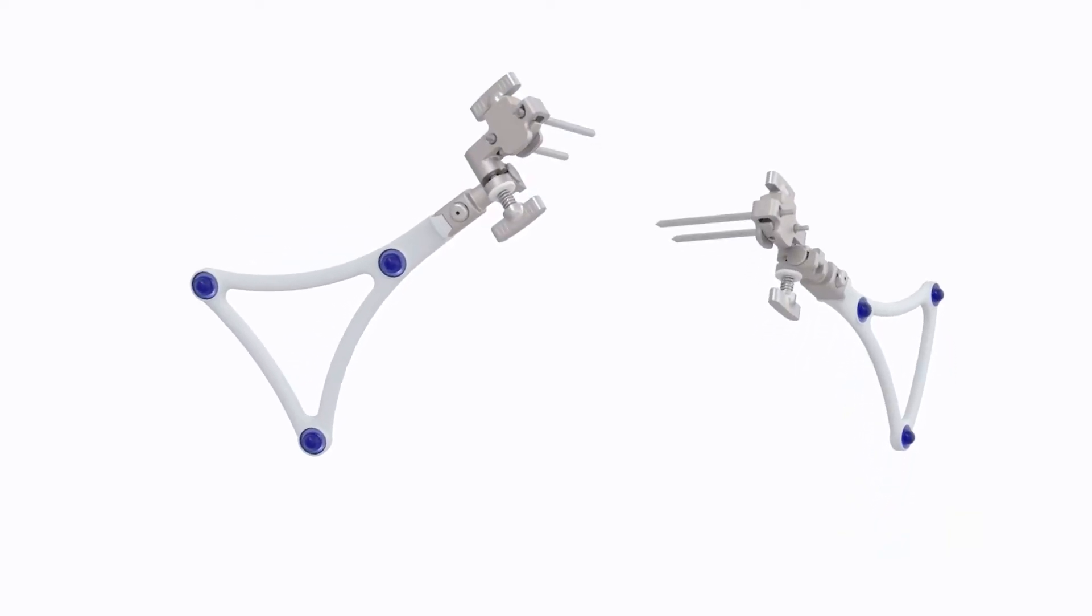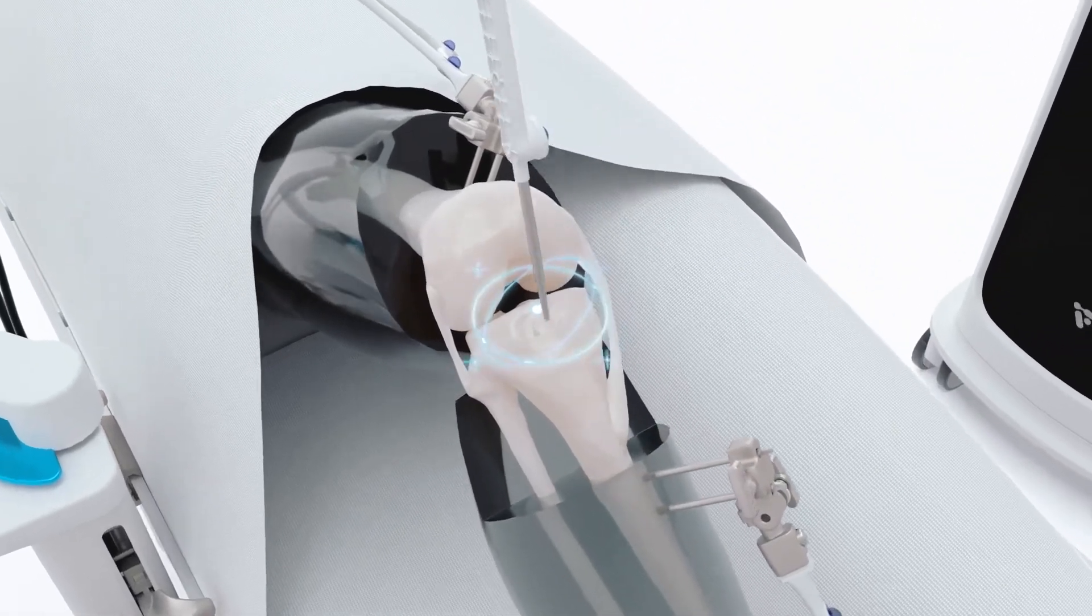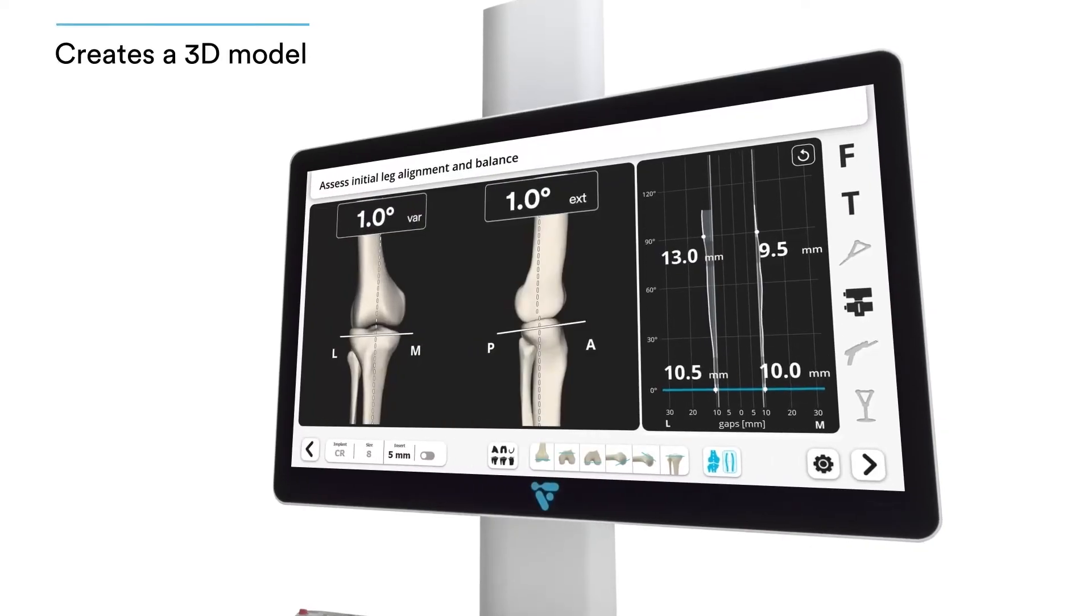Your surgeon will start the procedure by making an incision in your knee. Next, they attach trackers to your knee, which work with the camera to gain the information needed to perform your procedure. From this information, the surgeon creates a 3D model of your knee.